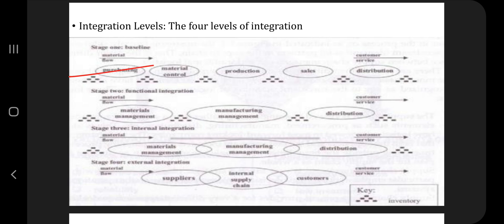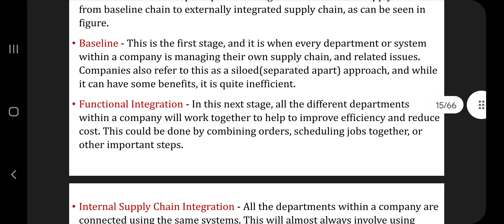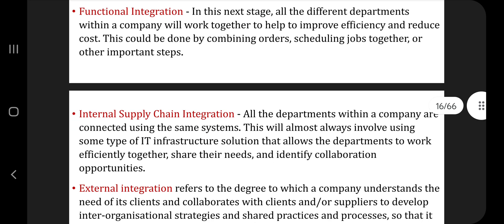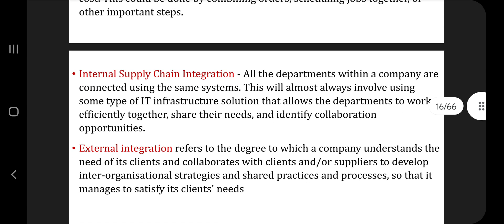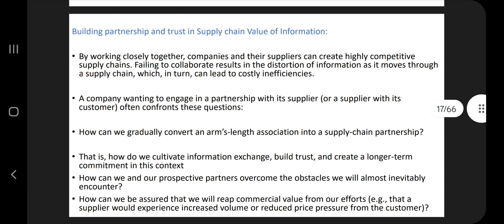Then we have the next one: what are the four levels of integration? The four levels of integration are given here. Stage one is the baseline, stage two is the functional integration, stage three is the internal integration, and stage four is the external integration. Make sure you practice this diagram and mention it in your answer script. Each of these is explained — what is baseline, what is functional integration, what is internal supply chain integration, what is external integration.